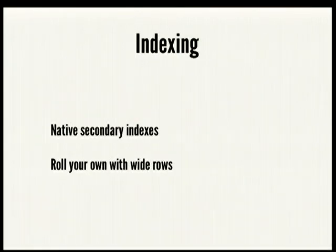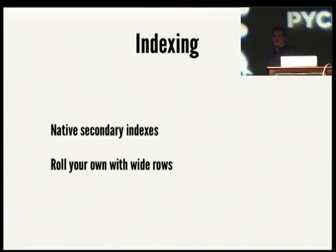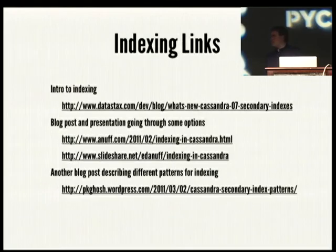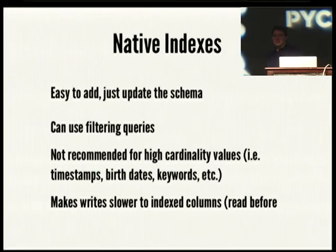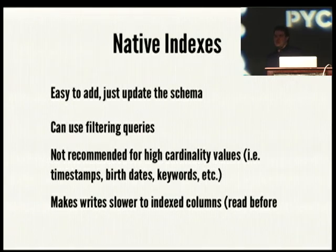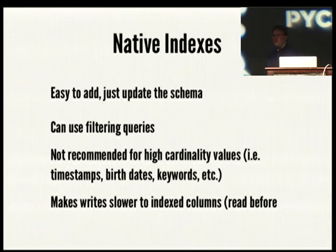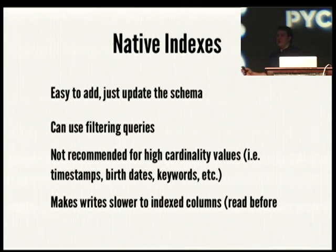Cassandra has some native indexing built in, and you can also roll your own. The native indexes are easy to use — just update your schema to say you want Cassandra to index a column, and you have to have told Cassandra what type that column is. It builds a column family in the background keyed by column values, so when you search on that index it gives back the matching rows. You can also do filtering when you query — you always need at least one equality operation, but after that you can do greater than, less than, and equal to on other columns.